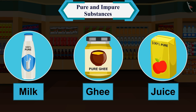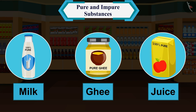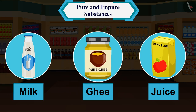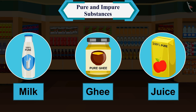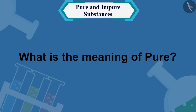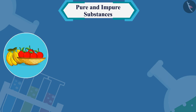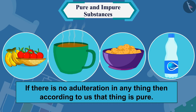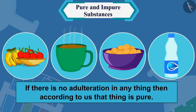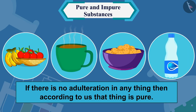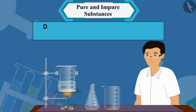that are being sold in the market today, you will find '100% pure' or 'pure' written on all the boxes. Can you tell us what is the meaning of 'pure'? For ordinary people like you and me, if there is no adulteration in anything, then according to us that thing is pure.